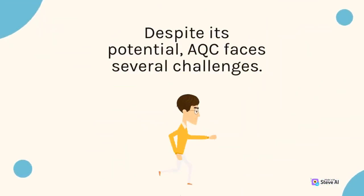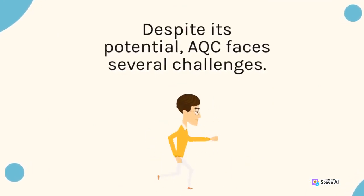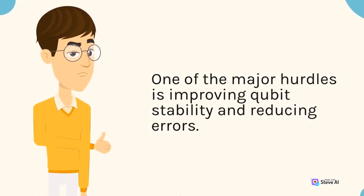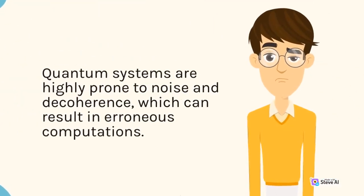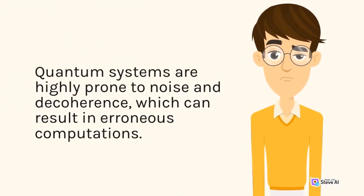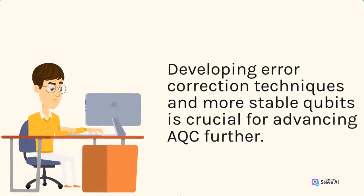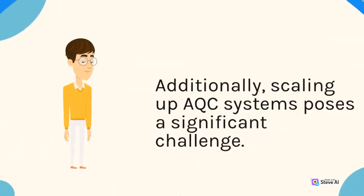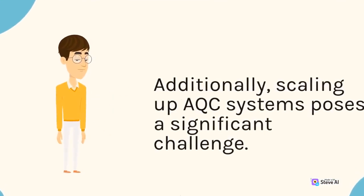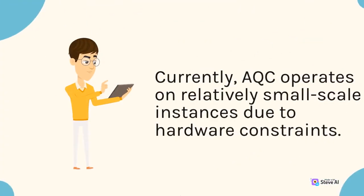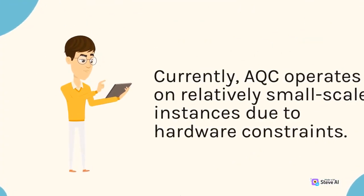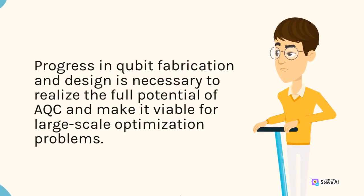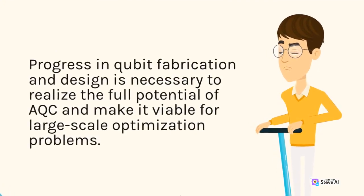Despite its potential, AQC faces several challenges. One of the major hurdles is improving qubit stability and reducing errors. Quantum systems are highly prone to noise and decoherence, which can result in erroneous computations. Developing error correction techniques and more stable qubits is crucial for advancing AQC further. Additionally, scaling up AQC systems poses a significant challenge. Currently, AQC operates on relatively small-scale instances due to hardware constraints. Progress in qubit fabrication and design is necessary to realize the full potential of AQC and make it viable for large-scale optimization problems.